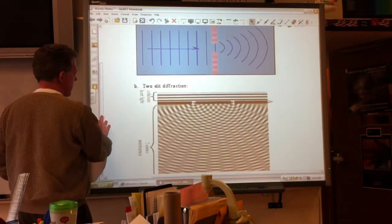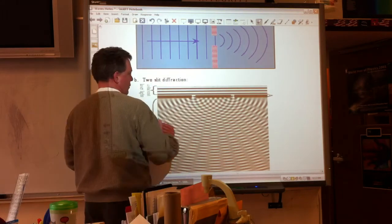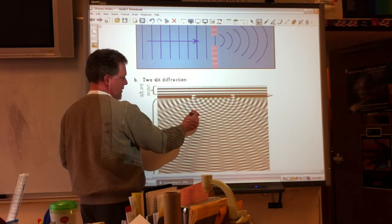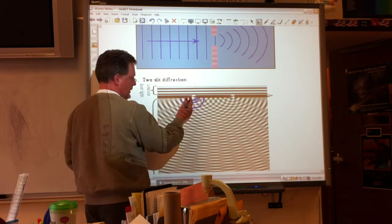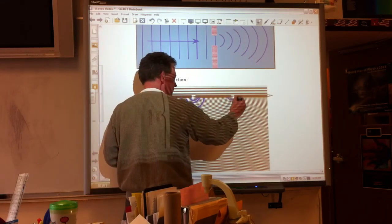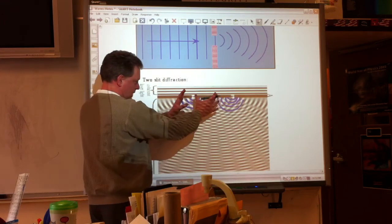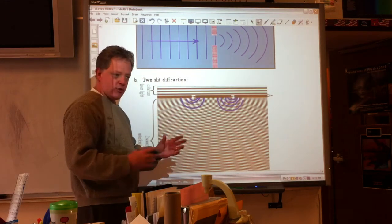Next is two slit diffraction. So now I have two holes, okay, and behind each hole, the waves are going to diffract around behind it in these circular patterns I was talking about. If the holes are very small, you end up with these circular waves going around, just like these were sources of individual waves. And then when we get together, they're going to interfere with each other, just like we saw with two point sources.